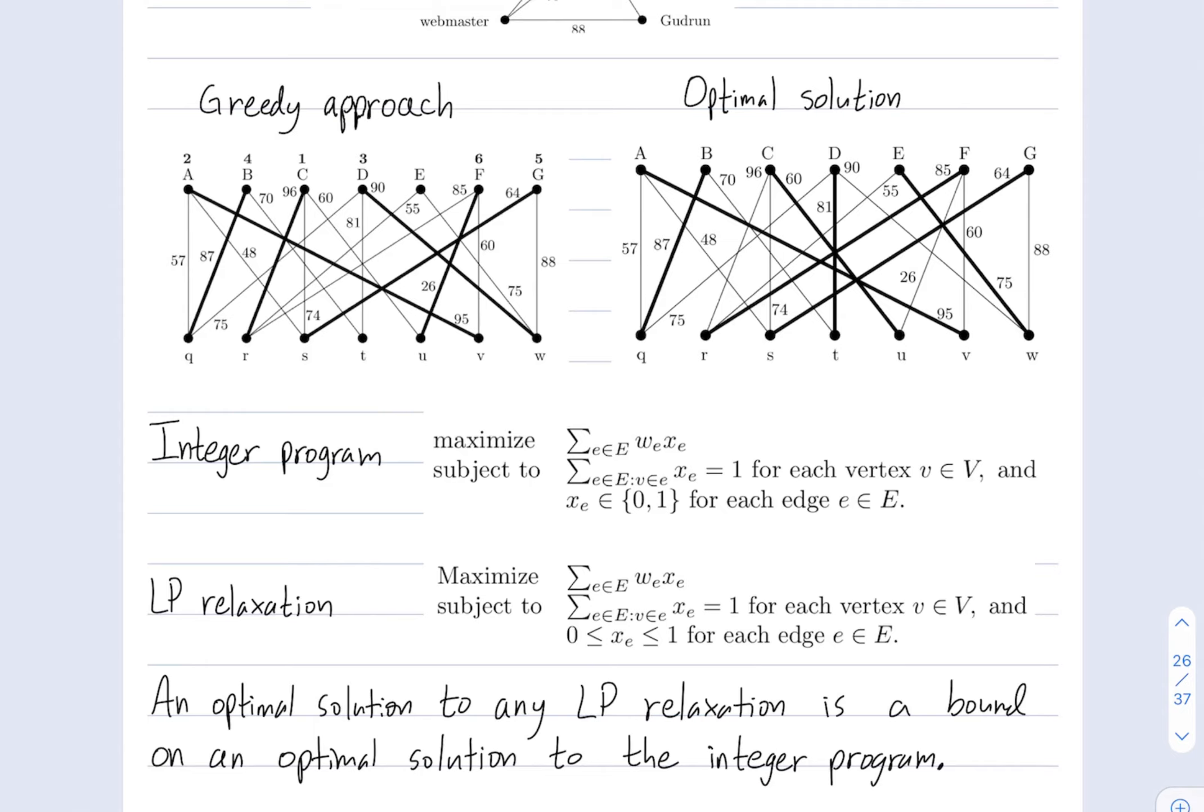Because every integer solution is also a solution to the LP relaxation, that means that we get bounds. So, the maximization, the optimal value that you can get in this LP relaxation, is going to be bigger than or equal to what you can get for the integer program. Just because every integer solution is also a solution to the LP relaxation, so the maximization can only get bigger.